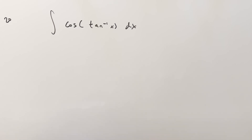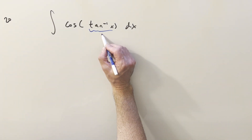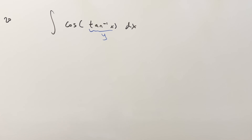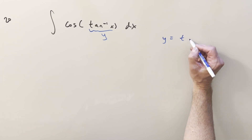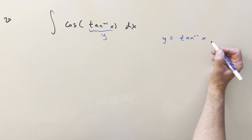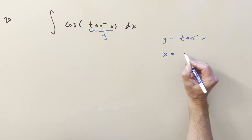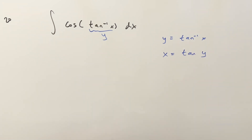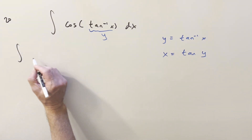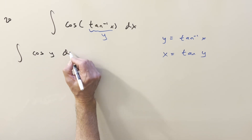For method one, I'm going to set arctan(x) equal to y. We're not going to do this as a u-substitution — I'm not going to take a derivative. We're just going to work with it as we have it. So if y equals arctan(x), then taking tangent on both sides and solving for x, we have x equals tan(y). Rewriting the integral, we've got the integral of cosine(y) dx.